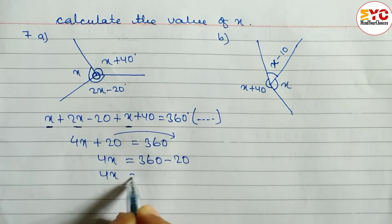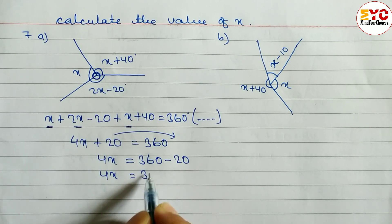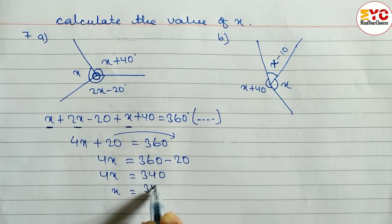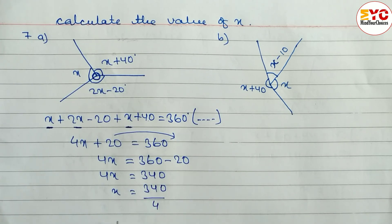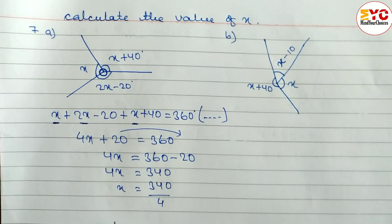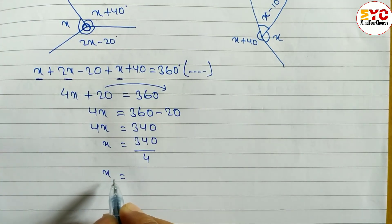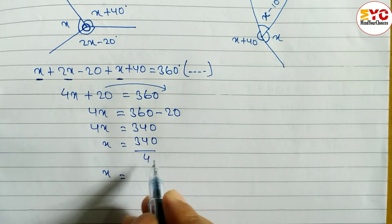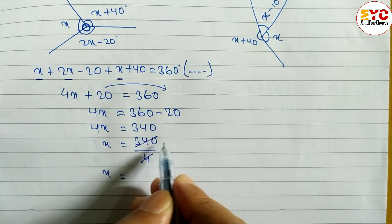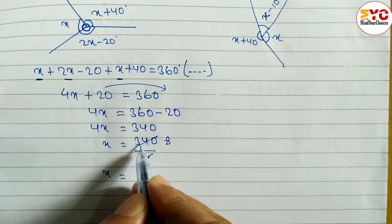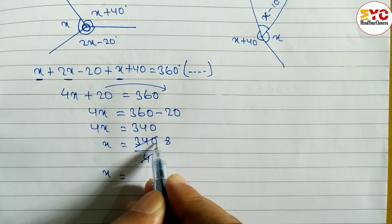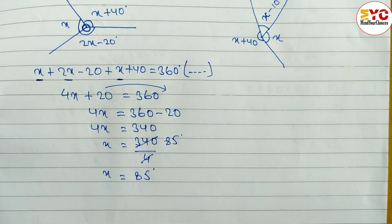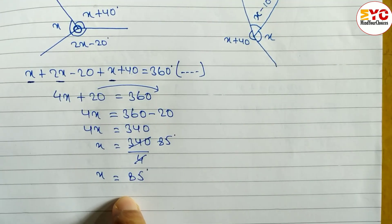4x equals 340, so x equals 340 divided by 4. The value of x is 85 degrees.